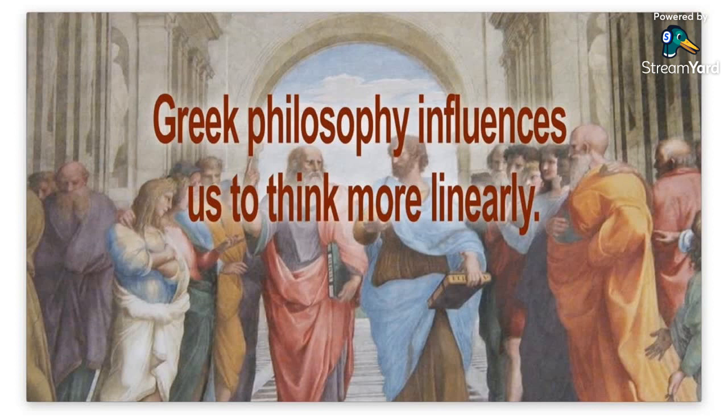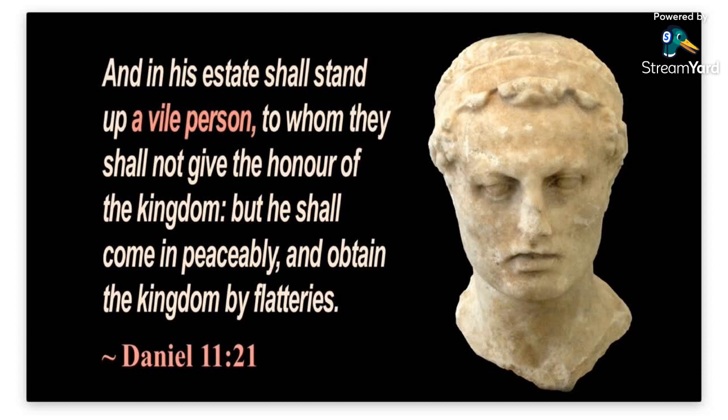So why do we have trouble reading Daniel? Greek philosophy influences us to think more linearly. We're all European thinkers in America — even if you're not European, that's been our schooling. Greek philosophy is logical: it goes from A to B to C, therefore D. But many ancient people didn't think linearly, but more circularly, in parallel structure, or in mini chiasms — going in one direction, then in the opposite direction; going forward to the end and then back to the beginning again.